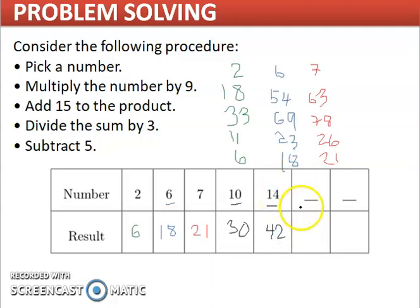Now try to pick your two numbers and evaluate the result. What can you observe on these results? We pick 2, we get 6. We pick 6, we get 18. We pick 7, we get 21. We pick 10.